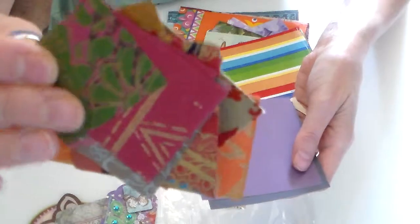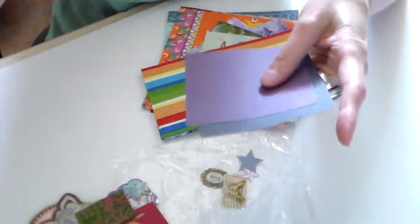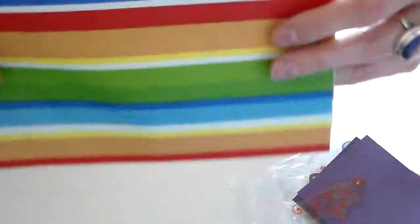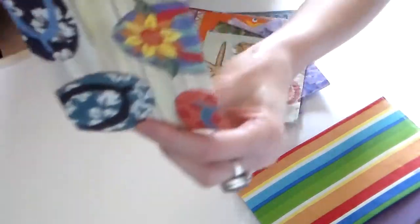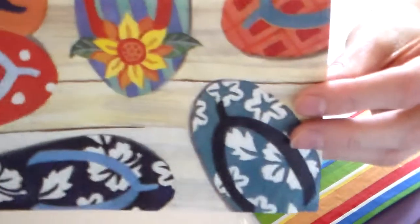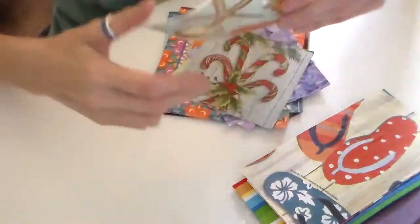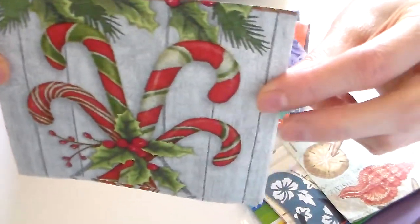And some pretty, looks like Japanese papers, just a mixture, a lot of different things. Goodness, lots of yummies, some stripes. Flip-flops, sandals, that screams summertime. Seashells, love seashells, that will be fun. And some candy canes, yum.